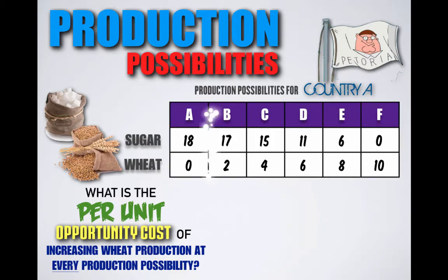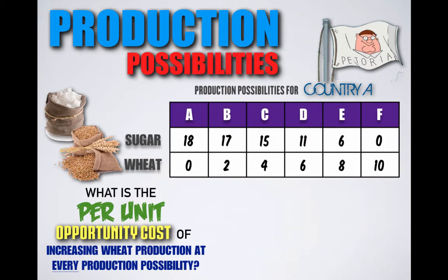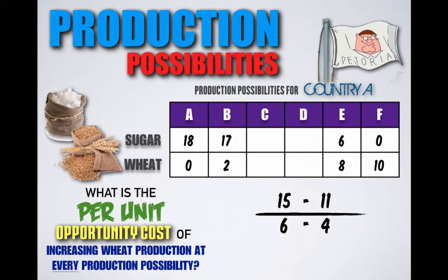If Petoria shifted from combination B to combination C, it would decrease sugar production from 17 to 15 units but increase wheat from 2 to 4 units. So Petoria would lose 2 units of sugar but gain 2 units of wheat, meaning for every unit of wheat gained, Petoria would lose the potential to produce 1 unit of sugar. Shifting from combination C to D, Petoria decreases sugar from 15 to 11 units but increases wheat from 4 to 6 units. Losing 4 units of sugar but gaining 2 units of wheat, Petoria gives up the potential to produce 2 units of sugar per unit of wheat.